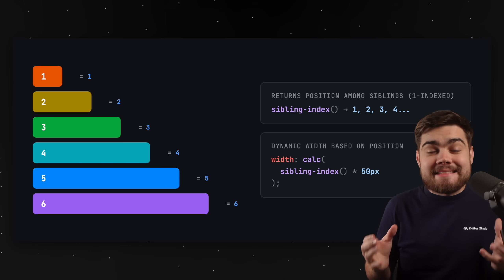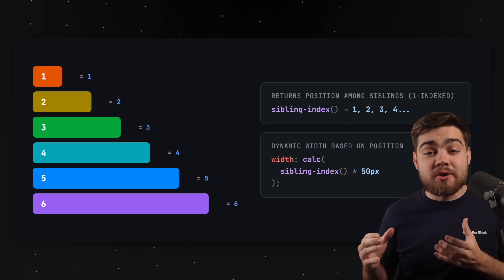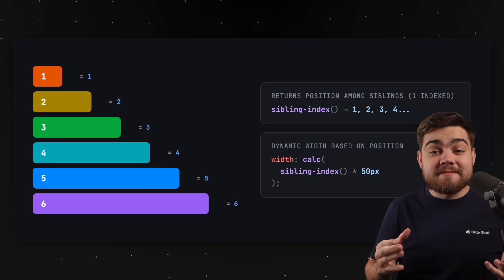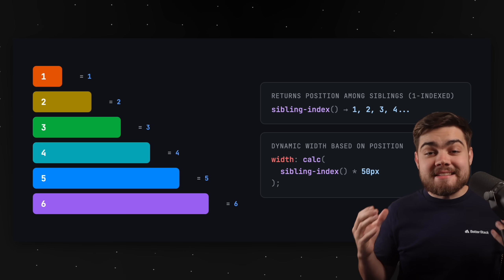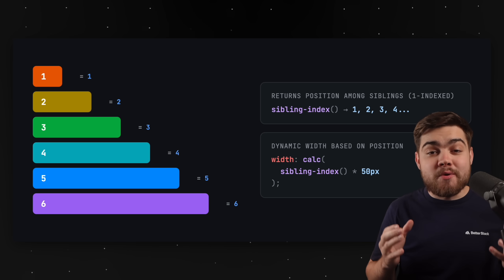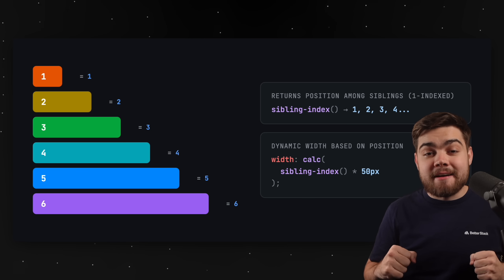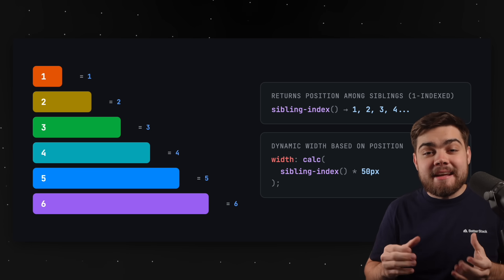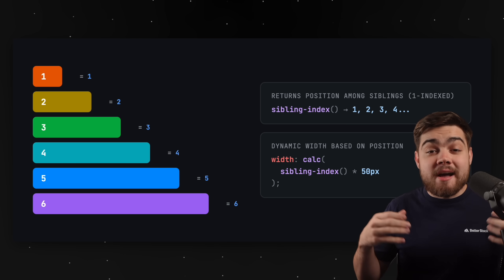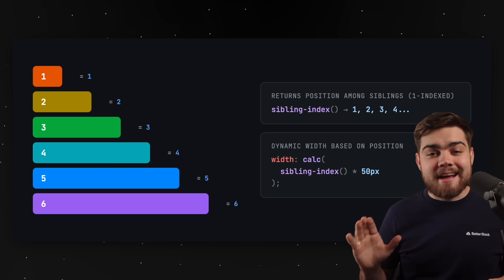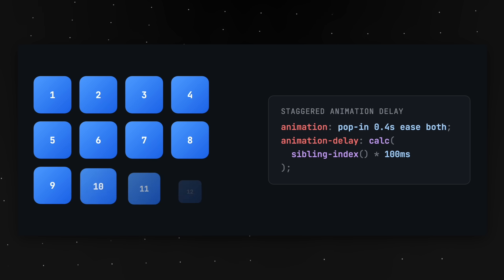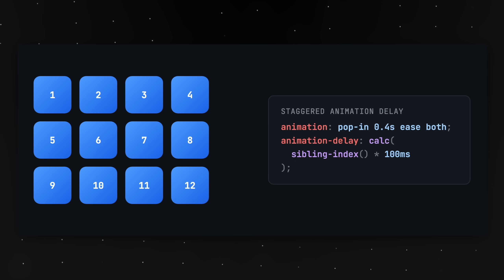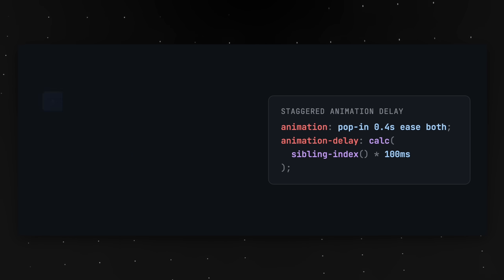Feature 8 is the sibling-index() function, which returns an integer representing the position of the current element relative to all its sibling elements. In an unordered list, each element will have a value of 1 to 6. To create a staggered width, all I've done is take the sibling-index() function and multiply it by 50 pixels — so 50 for the first, 100 for the second, and so on. This gets really useful for animations: to animate each element on a delay, simply use sibling-index() and multiply it by the desired delay. No complex JavaScript needed.